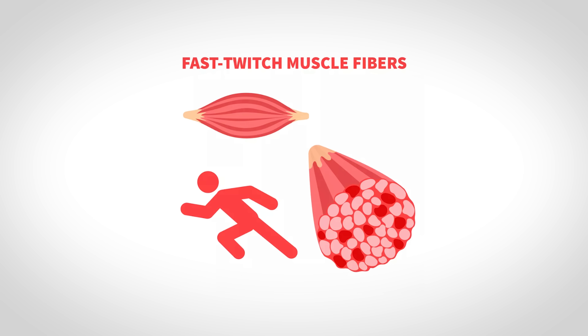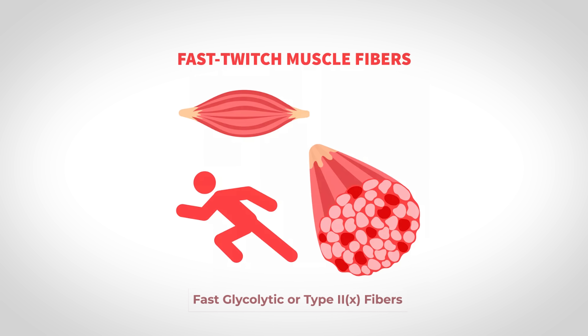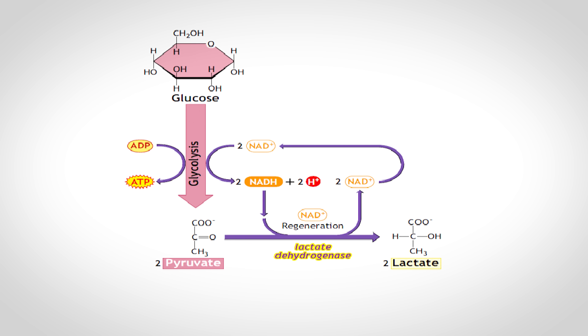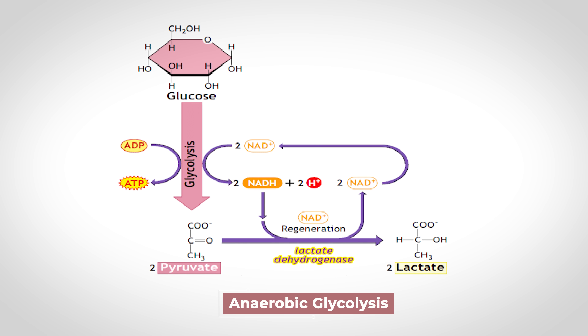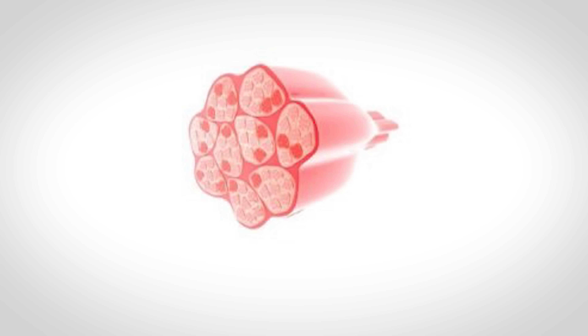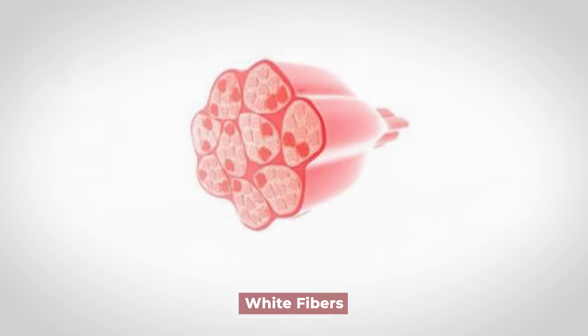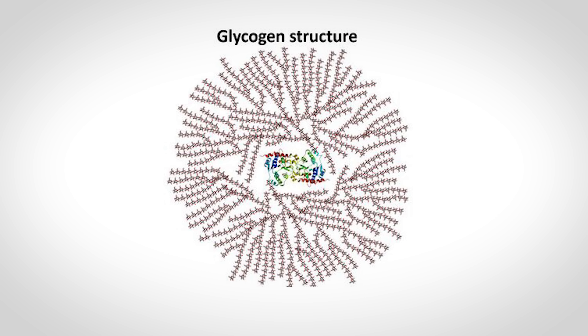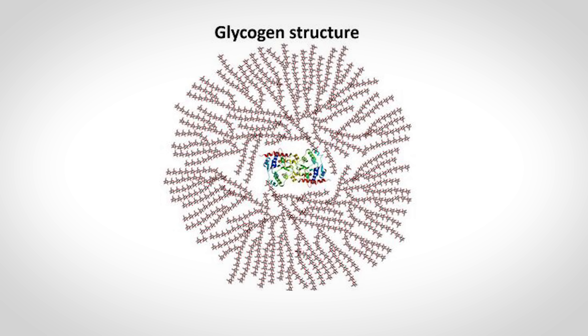Now let's move on to the fast twitch fibers, known as fast glycolytic or type 2X fibers. Fast glycolytic is also a great name because these fibers contract with the most velocity and generate ATP very quickly through anaerobic glycolysis — the breakdown of glucose in the absence of oxygen. Unlike slow oxidative type 1 fibers, the fast glycolytic fibers have few capillaries, few mitochondria, and less myoglobin, giving them a pale to white appearance — which is why they're sometimes called white fibers. However, these fibers tend to be the largest in diameter and are capable of producing the most force. They also have an incredible capacity to store glycogen, the storage form of glucose, which makes sense since they primarily use glycolysis to produce ATP.